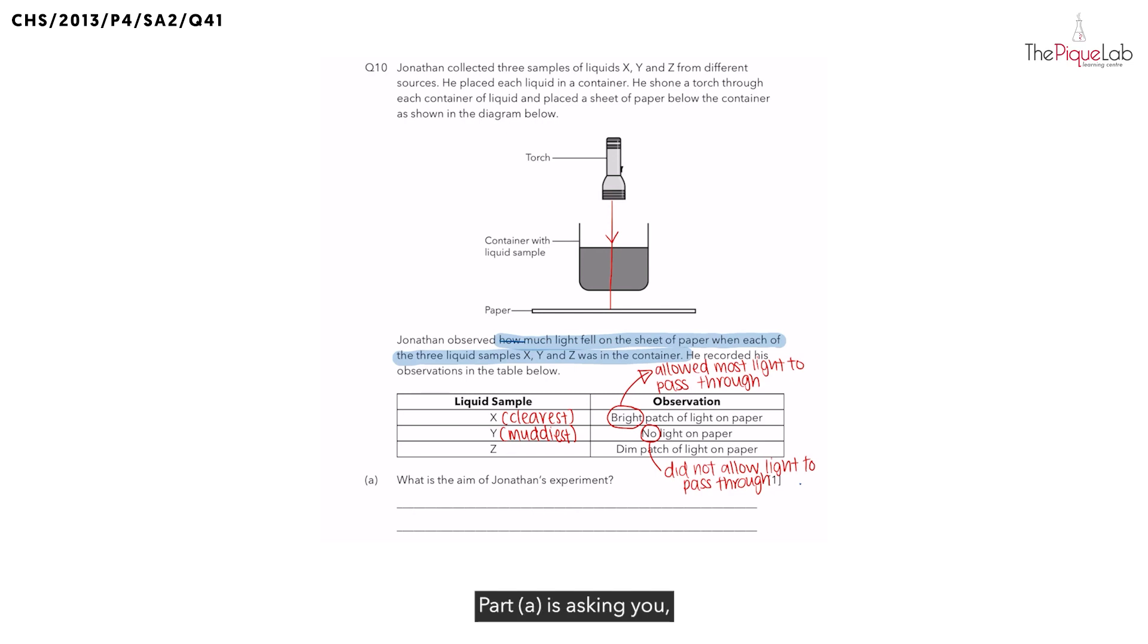Part A is asking you, what is the aim of Jonathan's experiment? Whenever we see an aim question, we would actually use the template to answer this question. So what is the template? It always goes like this: to find out if or how the change variable affects the measured variable.